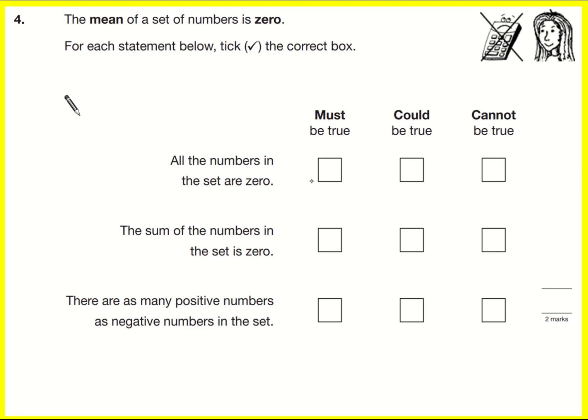All the numbers in the set are zero. Is that true? Could be true or cannot be true? Well, it definitely could be true because if you found the mean of these numbers, you would definitely get zero. But if you found the mean of these numbers, then you would also get zero. So it could be true. Okay, because I found an example where it is true, an example where it isn't true. That's a good plan for this question.